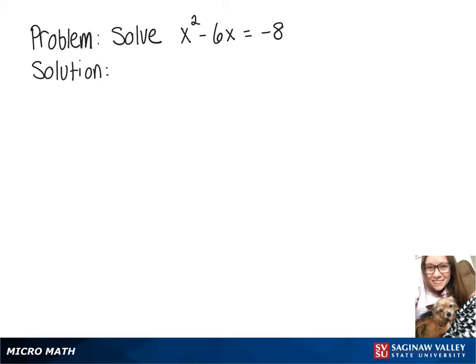In this video, we're going to solve x squared minus 6x equals negative 8. The first thing we're going to do is add 8 to both sides, which will give us x squared minus 6x plus 8 equals 0.